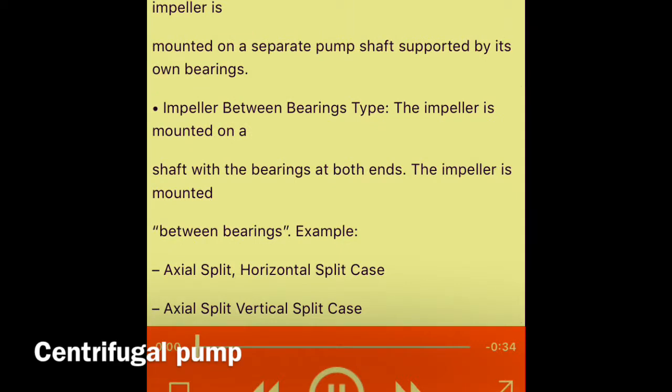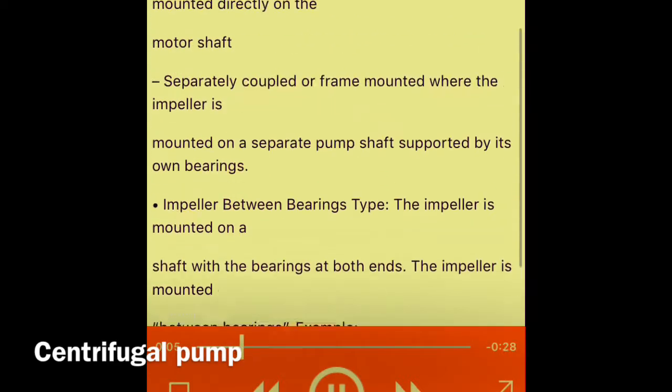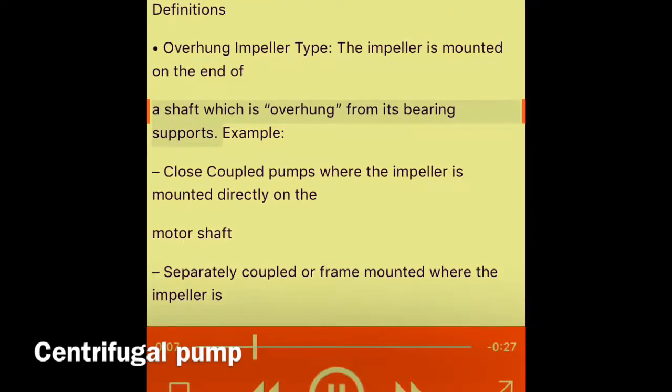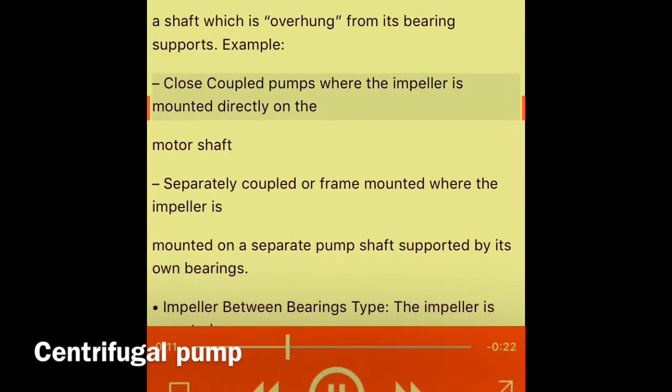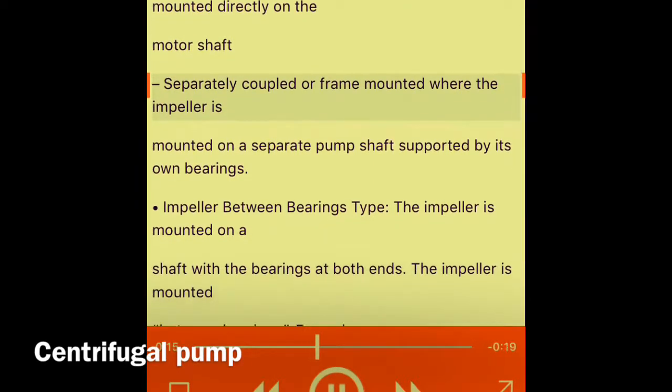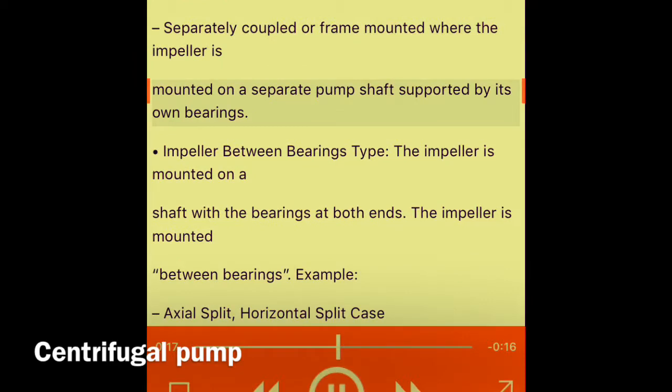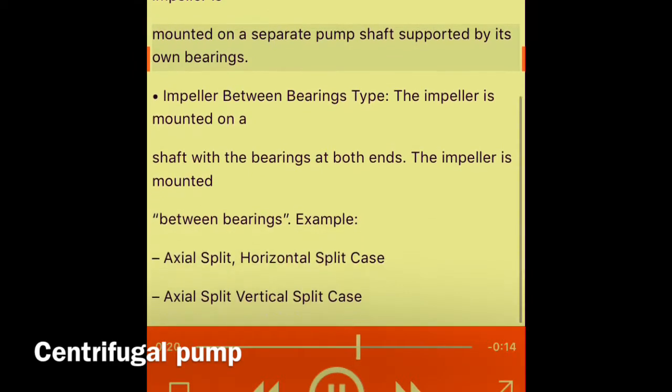Overhung impeller type: The impeller is mounted on the end of a shaft which is overhung from its bearing supports. Examples include close-coupled pumps where the impeller is mounted directly on the motor shaft, and separately coupled or frame-mounted where the impeller is mounted on a separate pump shaft supported by its own bearings.